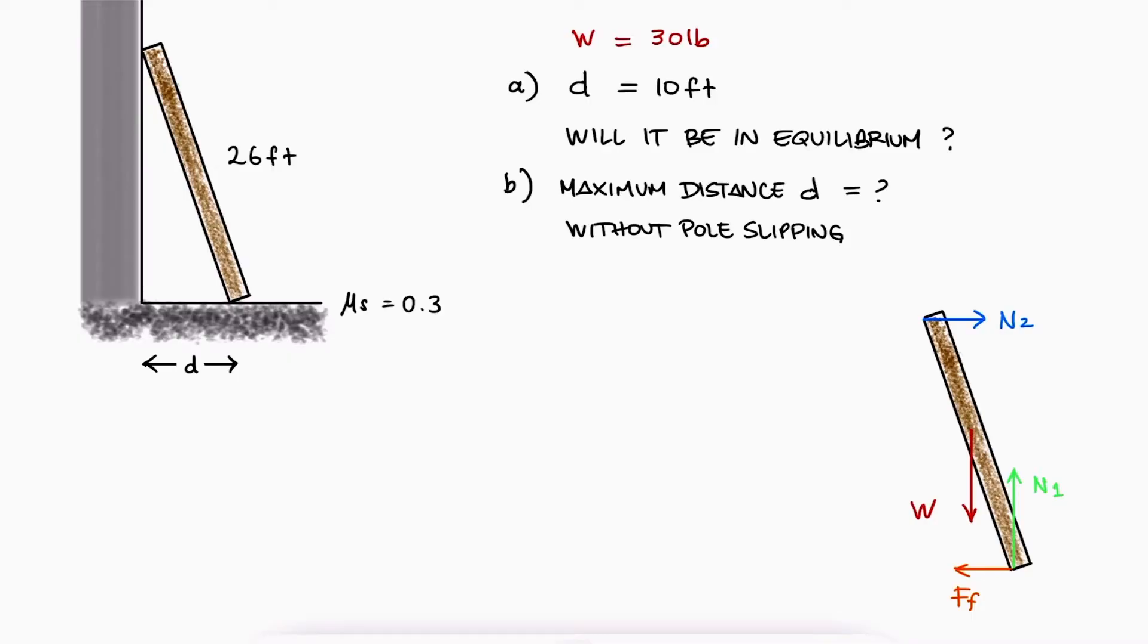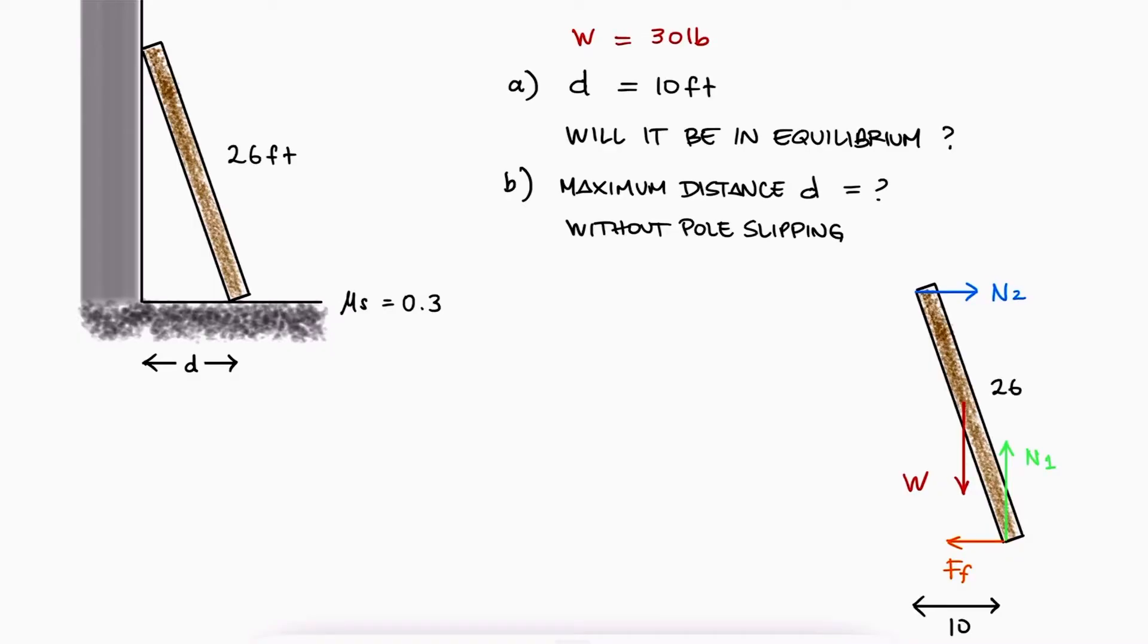With 10 being the distance between the wall and the point of contact at the floor and 26 being the hypotenuse,